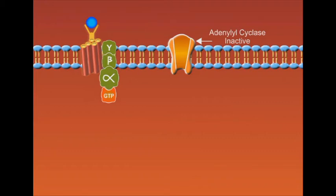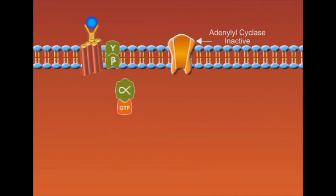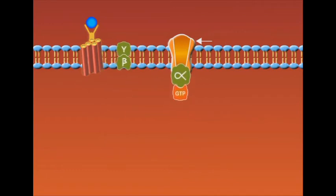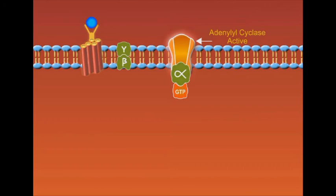The alpha-GTP subunit dissociates from the other subunits of G-Protein and binds to and activates the membrane-attached adenylyl cyclase enzyme. One of the main functions of active adenylyl cyclase enzyme is to activate the second messenger system through catalyzing the conversion of ATP into cyclic AMP.